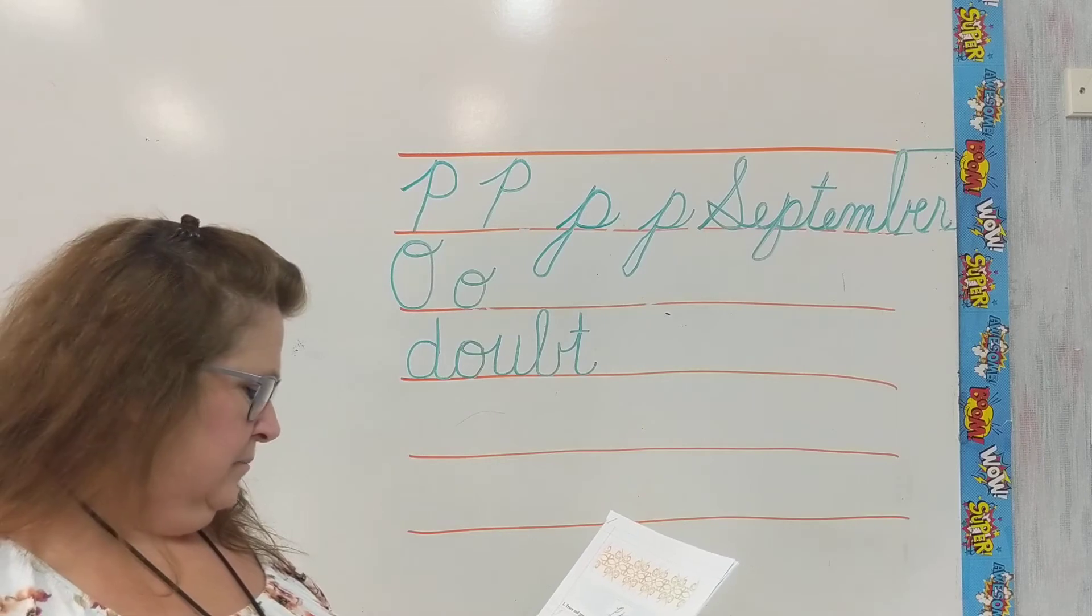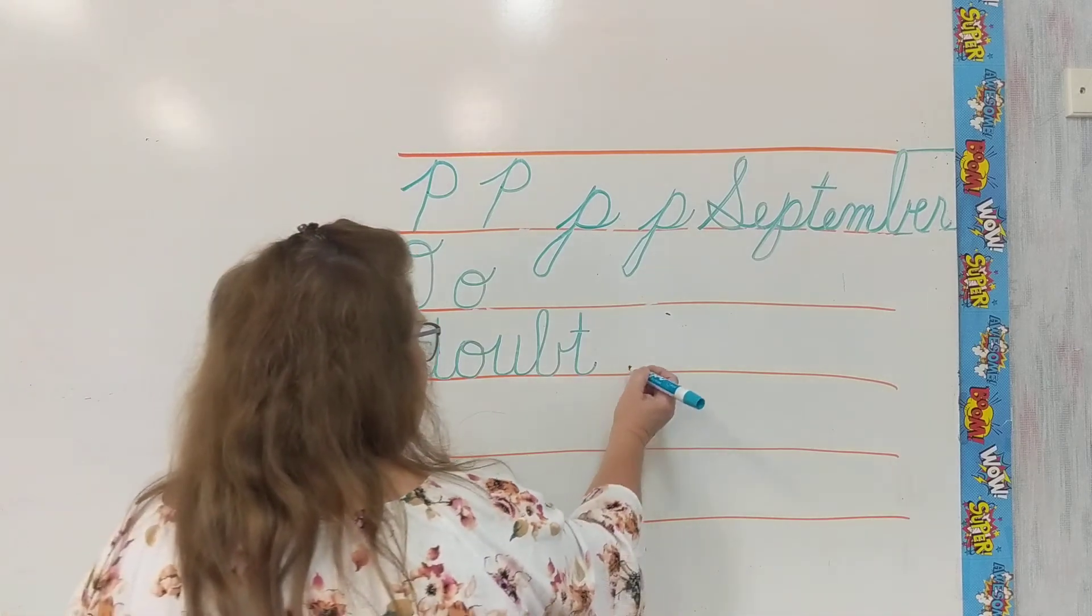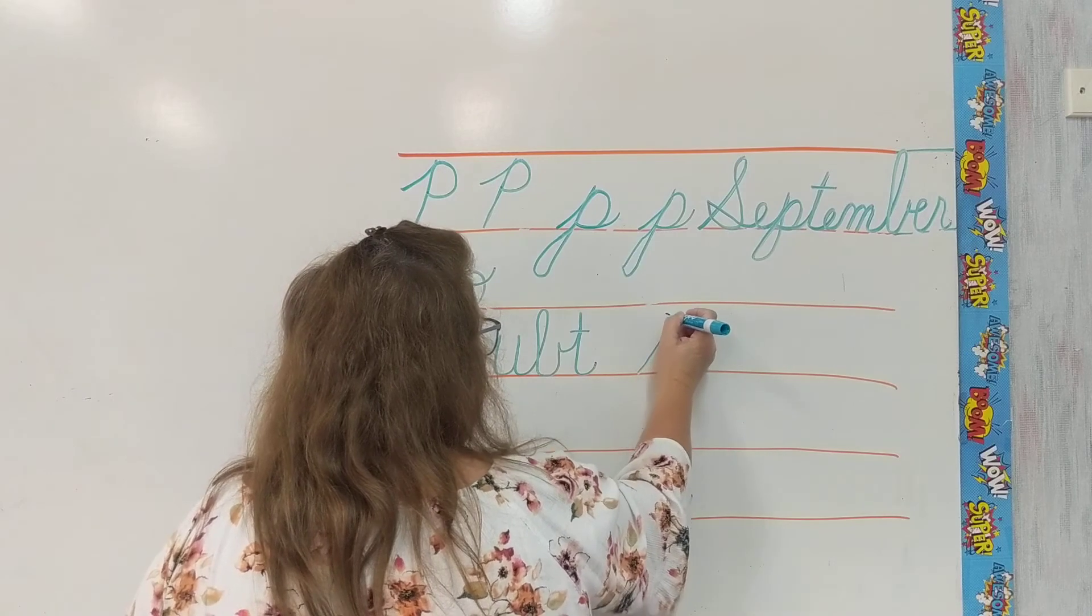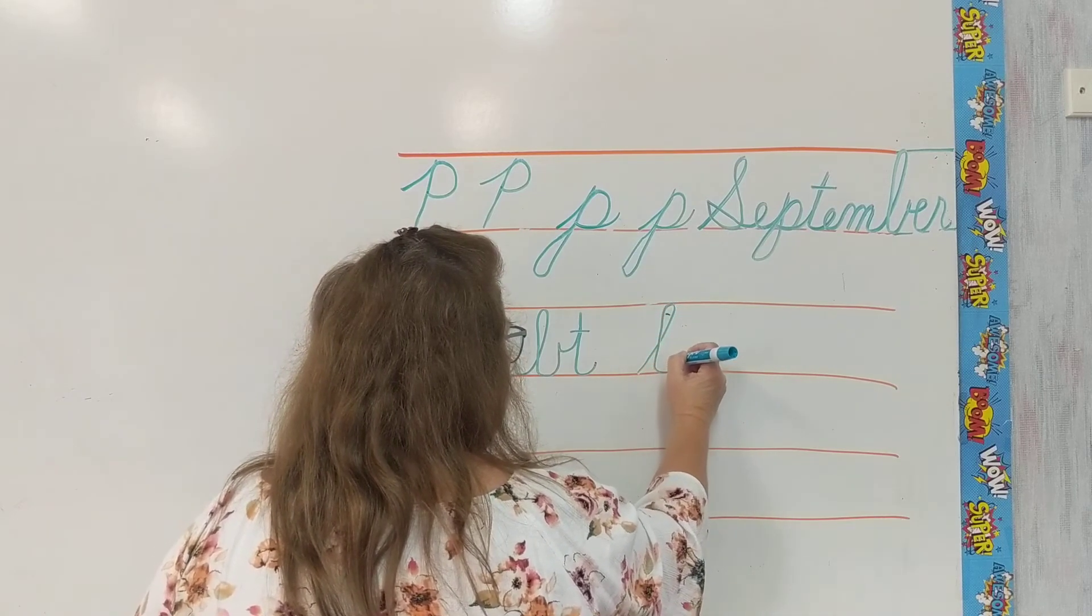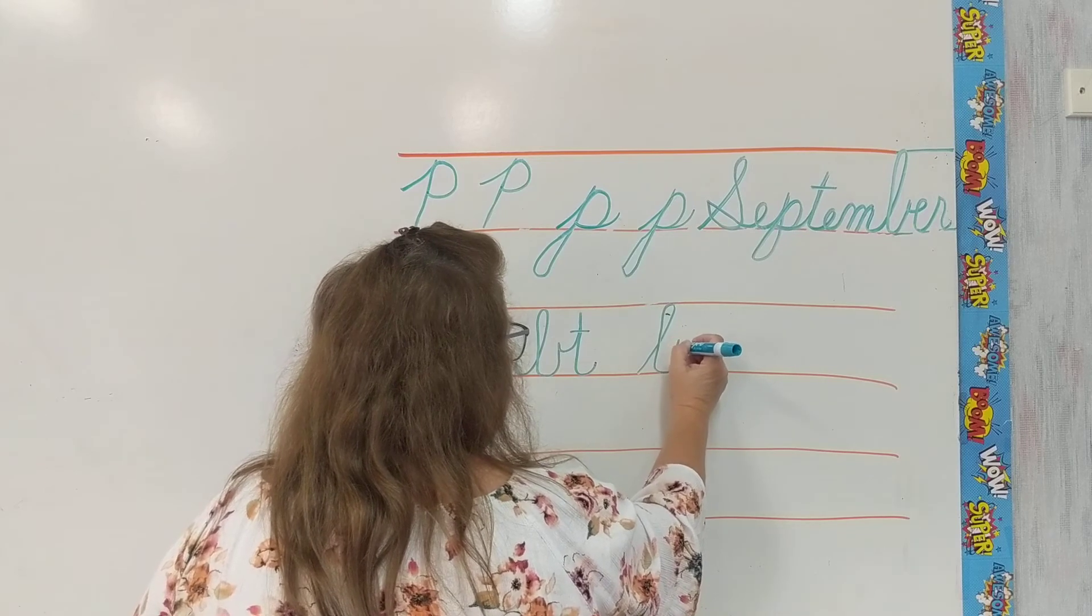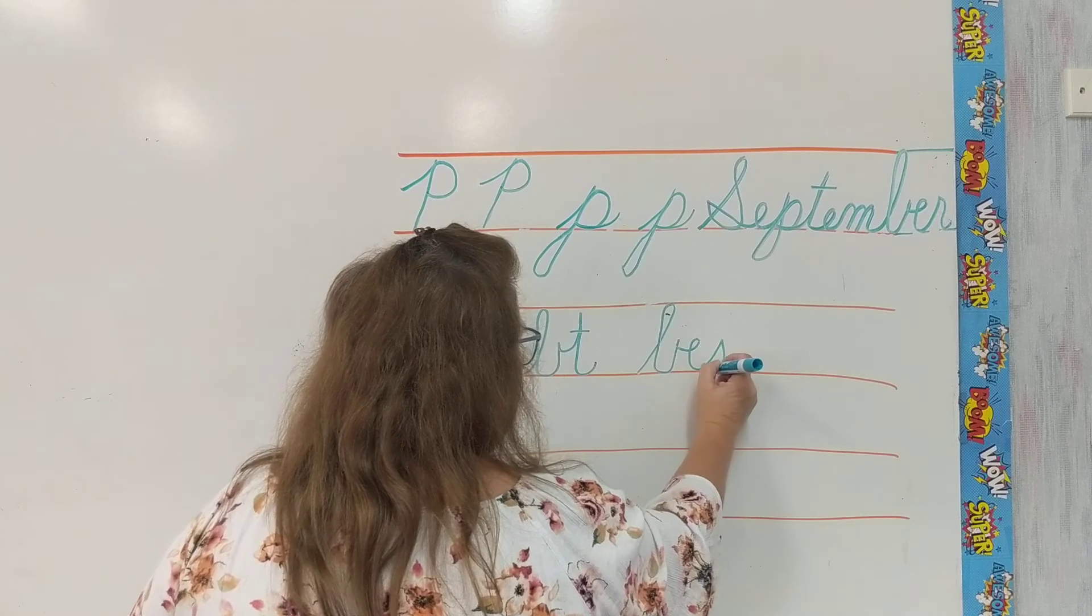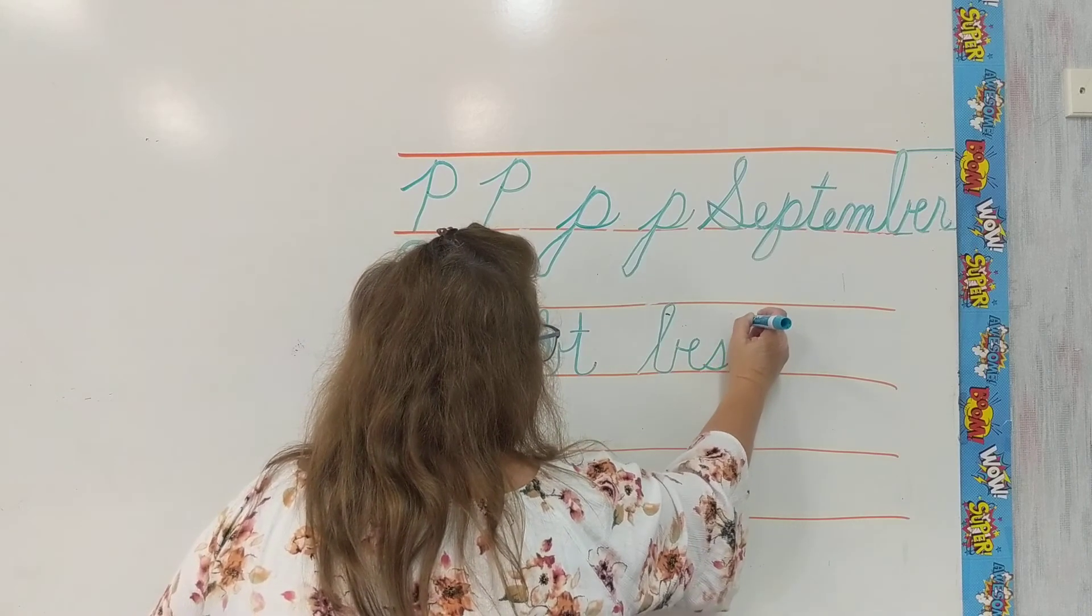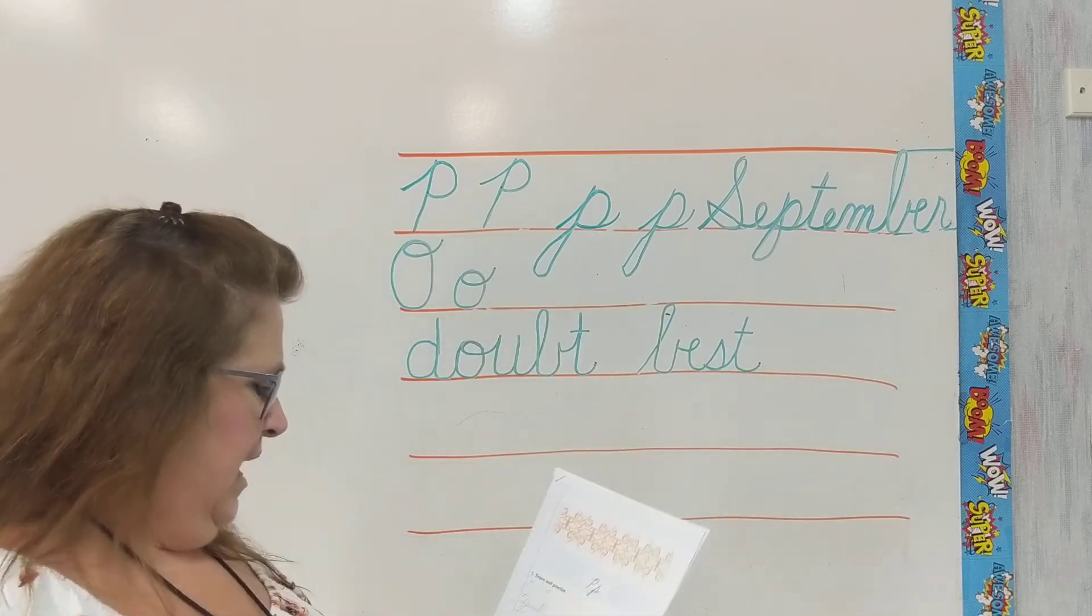And then you're going to be writing the word best. Let's look at the word best. Up and around. Come down. Swing out and up. Retrace back down. Swing out for your E. Come down. Go into your S. Retrace back out. Up. Swing out. Retrace down. And cross your T. Best.